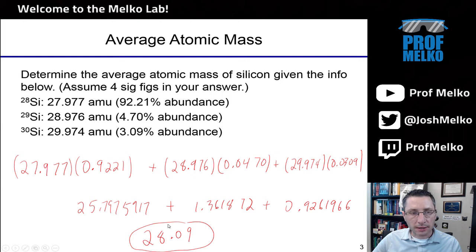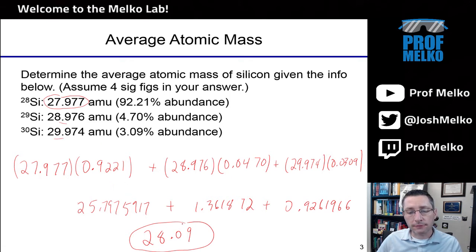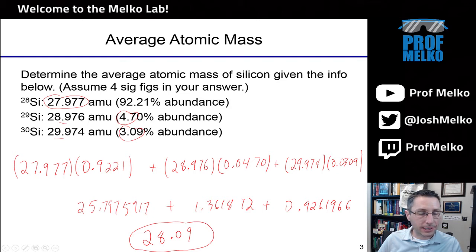As a check, I'll make sure this mass makes sense. The most abundant isotope is silicon-28, and since 92% of all silicon is that mass, my final answer should be pretty close to 28. The heavier isotopes elevate the average a little bit — that's why the final mass of 28.09 is slightly higher than 28. The small abundances of the heavier isotopes make the average just a little higher. That looks correct.